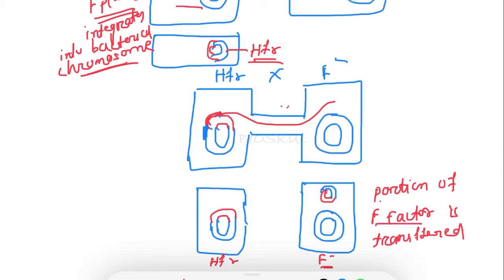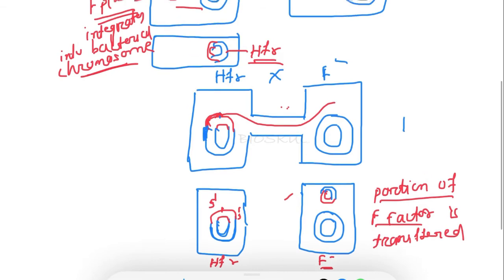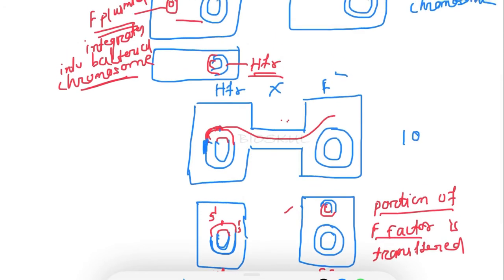Why is only a portion of the F factor transferred and not all of it? Because the interruption or nick is formed at the middle of the F factor. The end present at the 5' end is transferred to the recipient bacteria, and the other portion at the 3' end is only transported to the recipient bacteria when the entire bacterial chromosome is transferred. For E. coli, that takes around 100 minutes.